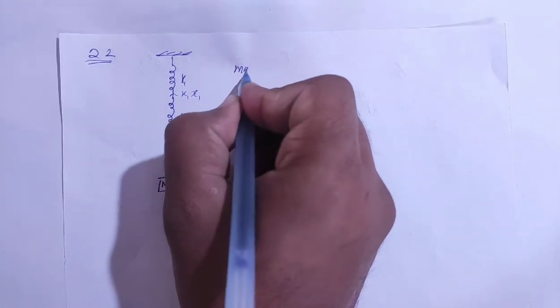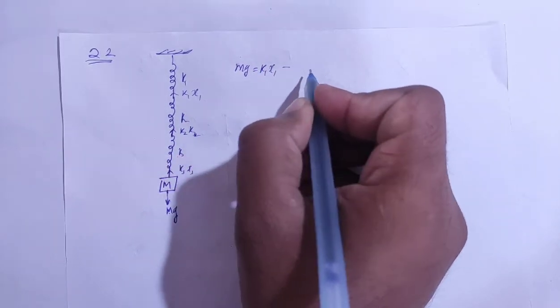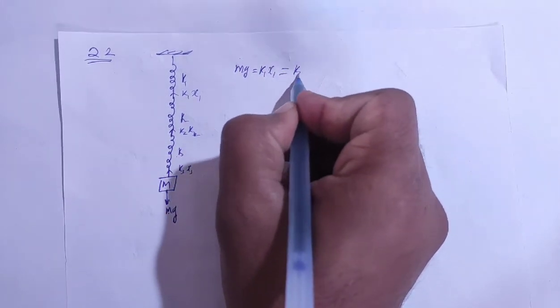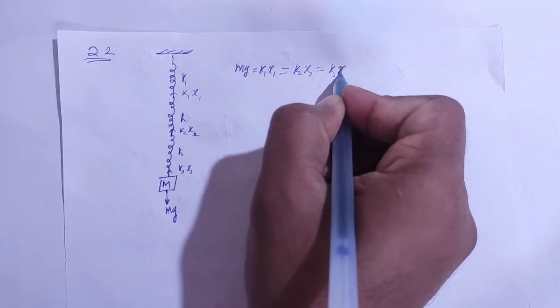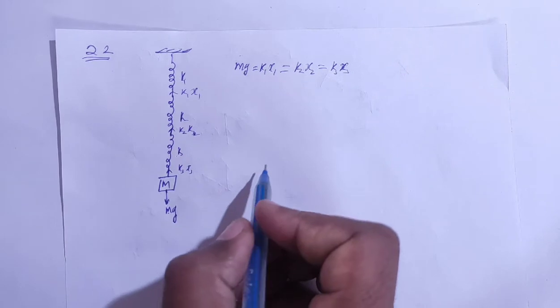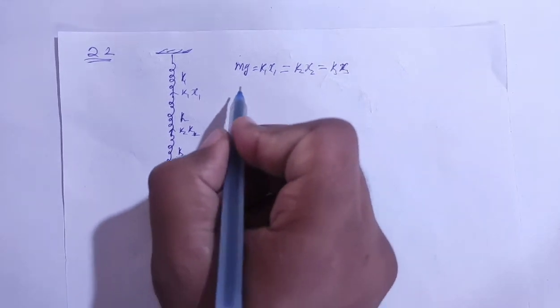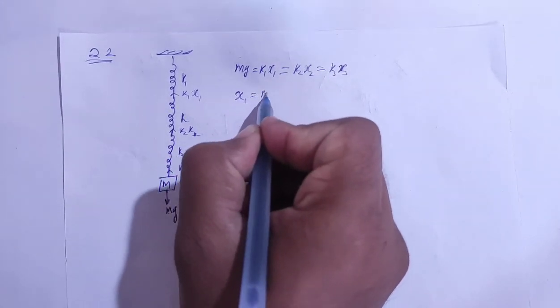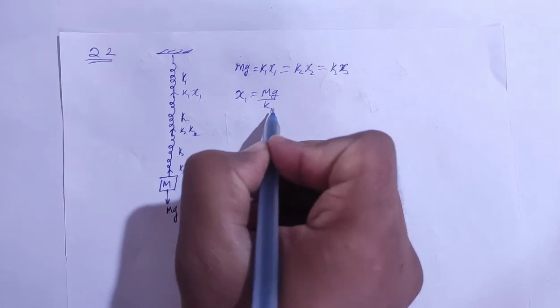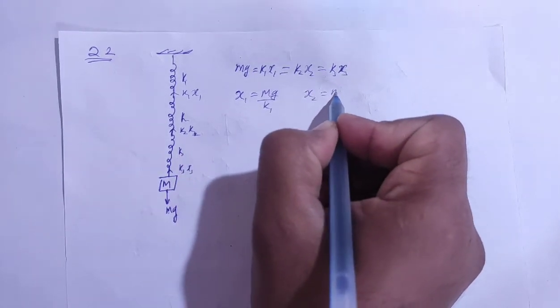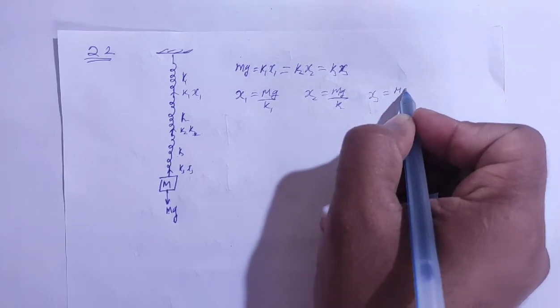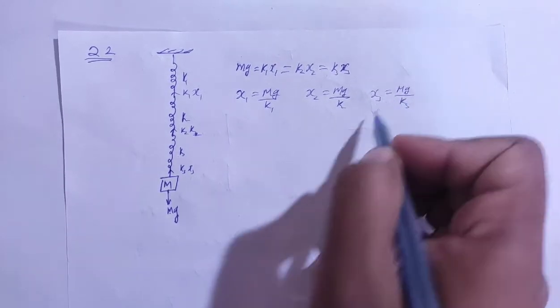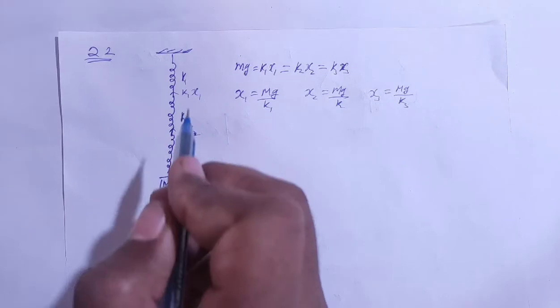So we can write mg is equal to k1 x1 is equal to k2 x2 is equal to k3 x3. Right. So from here we can find the values of x1, x2, x3. x1 will be mg by k1, x2 will be mg by k2, x3 will be mg by k3.